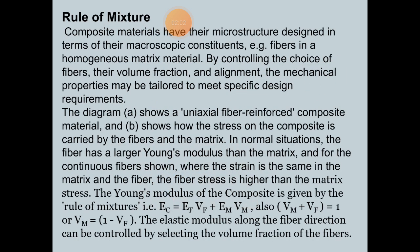In the rules of the mixture, composite materials have their microstructure design in terms of the microscopic constituents. Examples of this include fibers in a homogeneous matrix material. By controlling the choice of the fibers, their volume fractions and alignment, the mechanical properties may be tailored to meet specific design requirements.